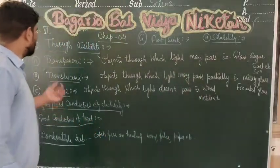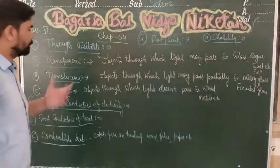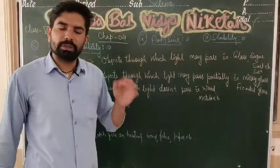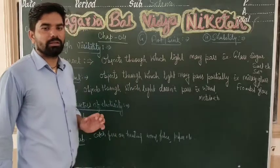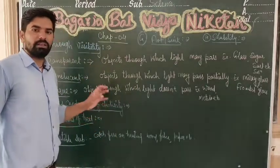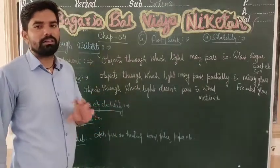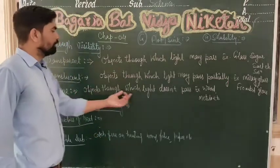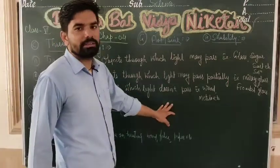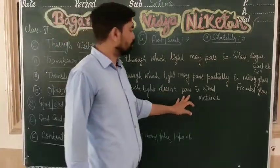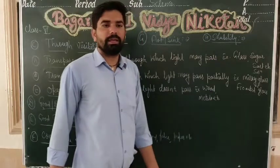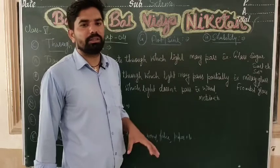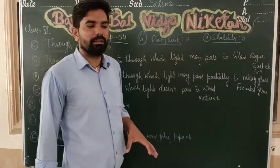Next are opaque objects. Opaque objects are those through which light does not pass at all. These are objects through which absolutely no light passes.